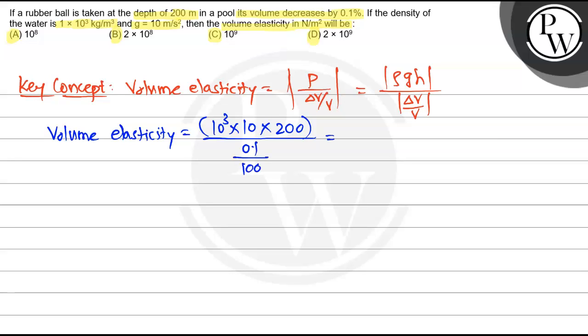So this becomes 10³, 10⁴, into 2, into 10². This 100 goes up, basically 10² it becomes, divided by 0.1.